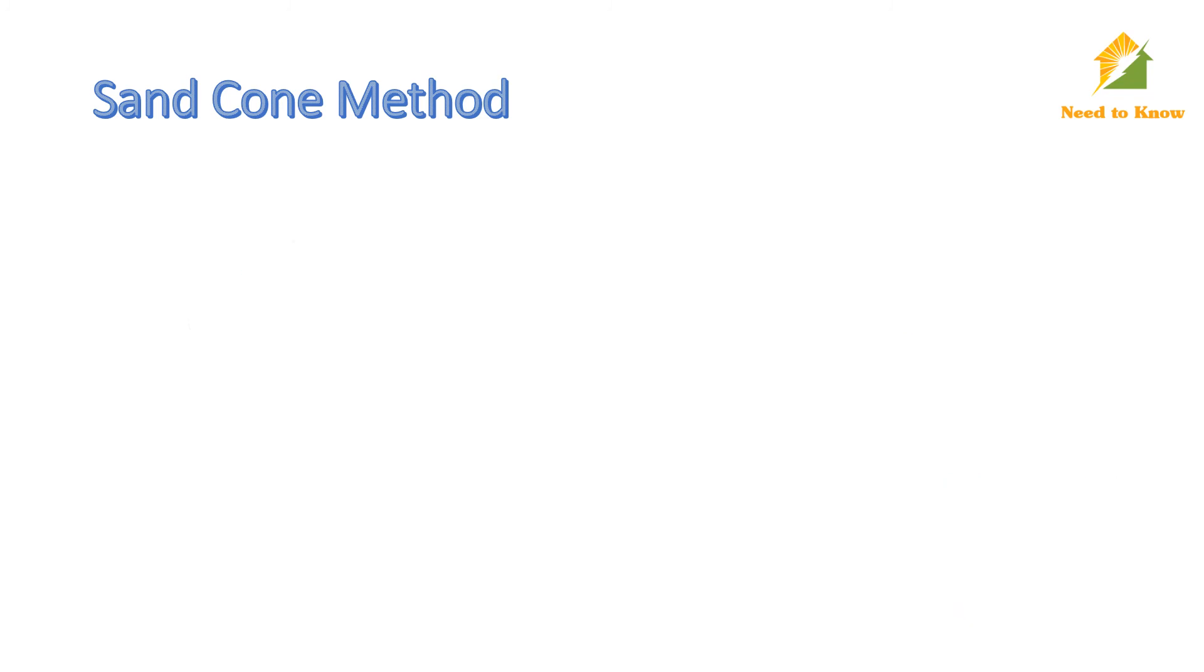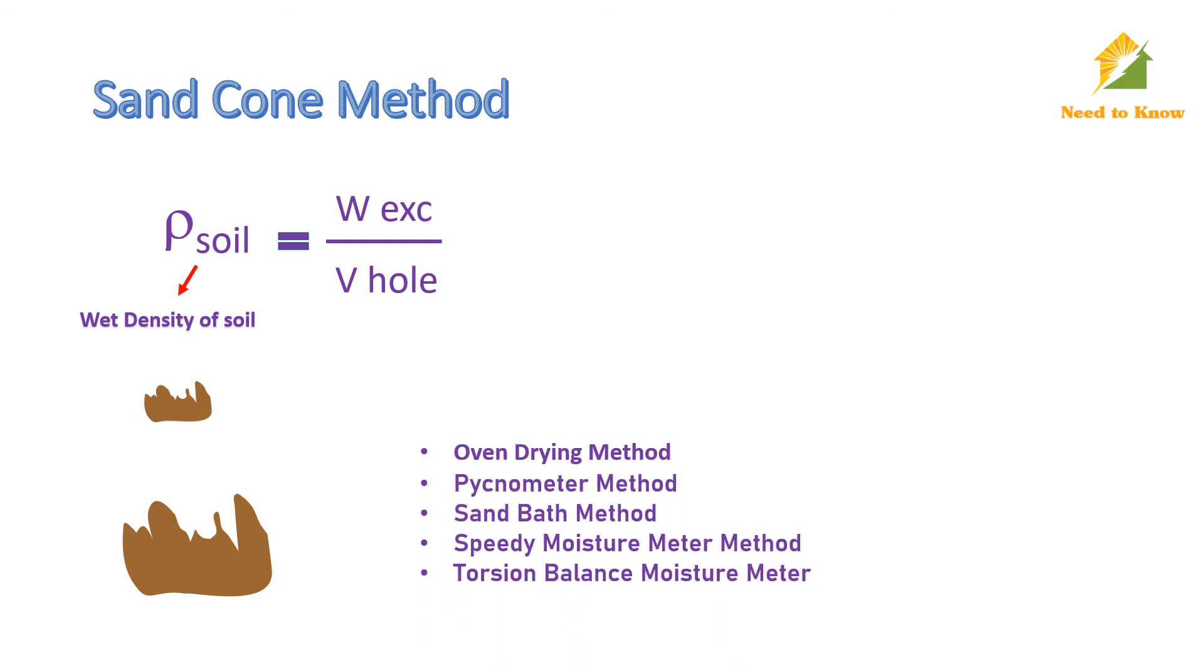From this, we can calculate bulk density of soil whose compaction is to be determined by dividing the weight of excavated soil over the volume of that hole. This is the wet density of soil because the soil has some moisture. To measure this moisture content, take a small sample from the excavated soil and use any moisture content determination method.